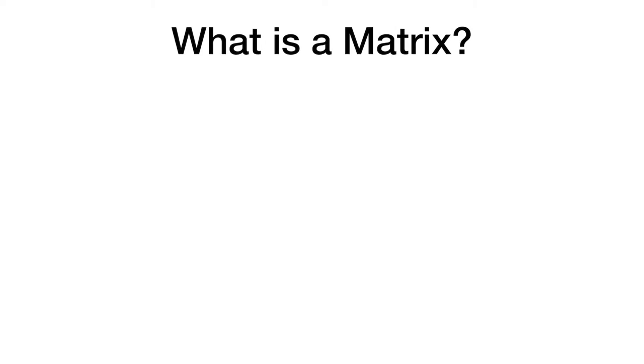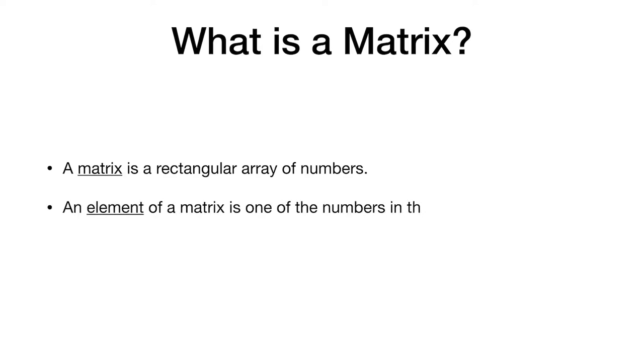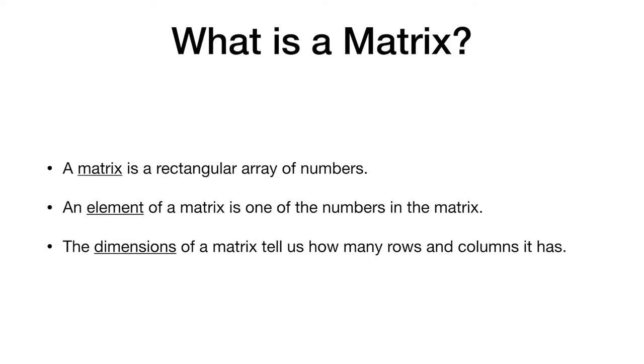So the answer to that is, a matrix is a rectangular array of numbers. Now, within the matrix we have many elements. An element of a matrix is one of the numbers in the matrix. And finally, the dimensions of a matrix tell us how many rows and columns it has.